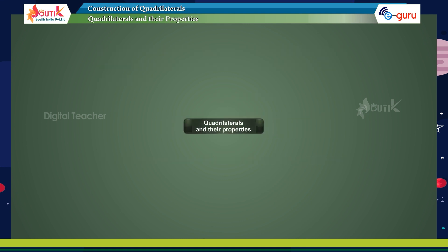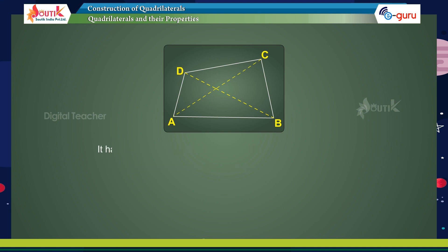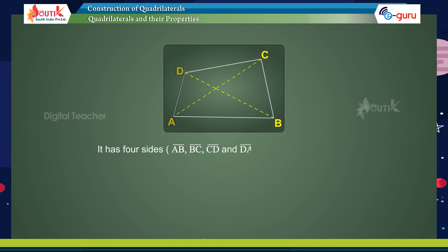Quadrilaterals and their properties. Any four-sided shape is a quadrilateral. In the figure, ABCD is a quadrilateral. It has four sides: AB, BC, CD, and DA.